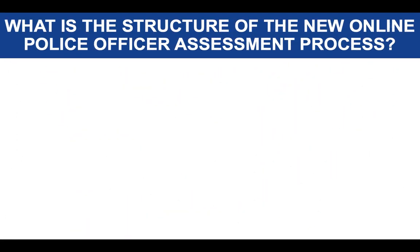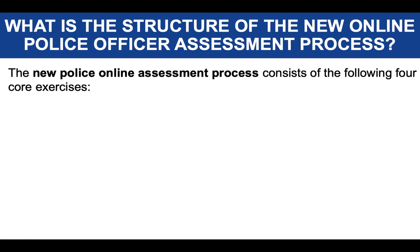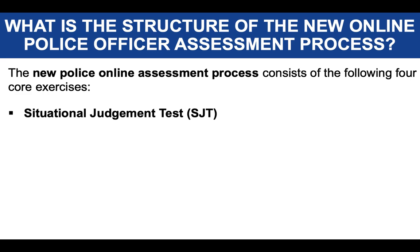The new police officer online assessment process consists of four core exercises. First, you will have to undertake a Situational Judgment Test, or SJT, where you will be presented with scenarios and must decide what you would do in that particular situation — you are given a number of answer options. I'll go into more detail about that as we progress through the tutorial.